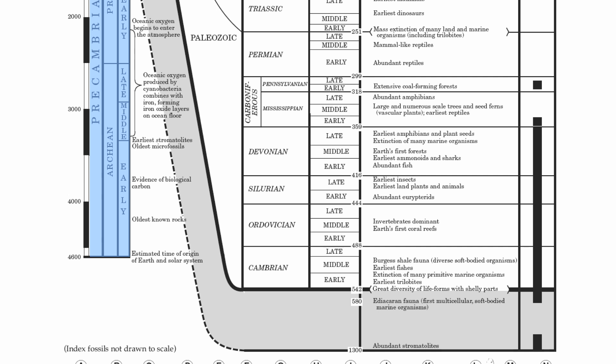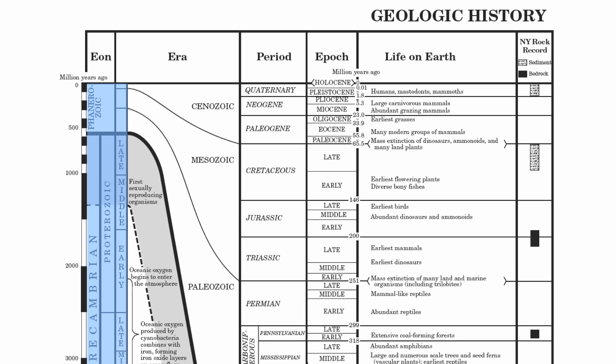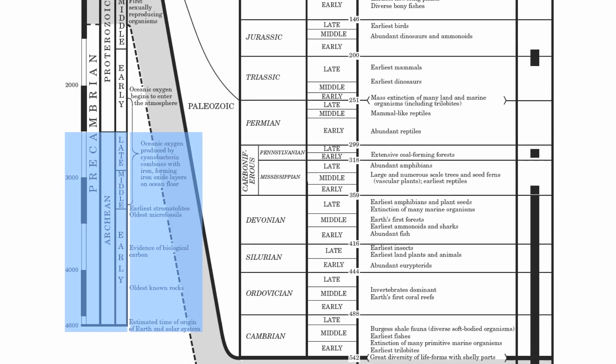Precambrian is such a big unit of time that it's broken up into two sub-eons called the Archean and the Proterozoic. Above the Precambrian, we have the Phanerozoic, which is the eon we currently live in. The earliest part of the Precambrian is the Archean, which extends all the way to the beginning of our planet, 4.6 billion years ago — estimated time and origin of the Earth — with oldest known rocks, evidence of biological carbon, all the way up to about the middle Precambrian, where oceanic oxygen produced by cyanobacteria was starting to form.